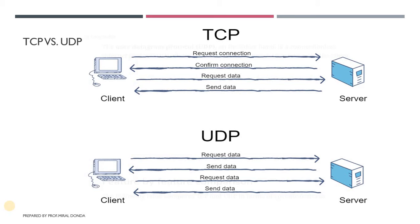In this lecture we are going to learn about the difference between TCP protocol and UDP protocol. As shown in the figure, in TCP we first have to request the connection, and after confirmation of the connection we can send the data. While in UDP we can directly send and receive the data — there is no need to create or request a connection establishment.